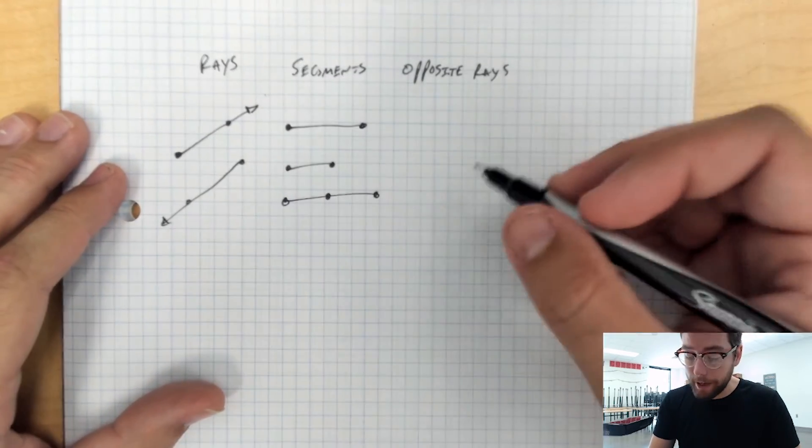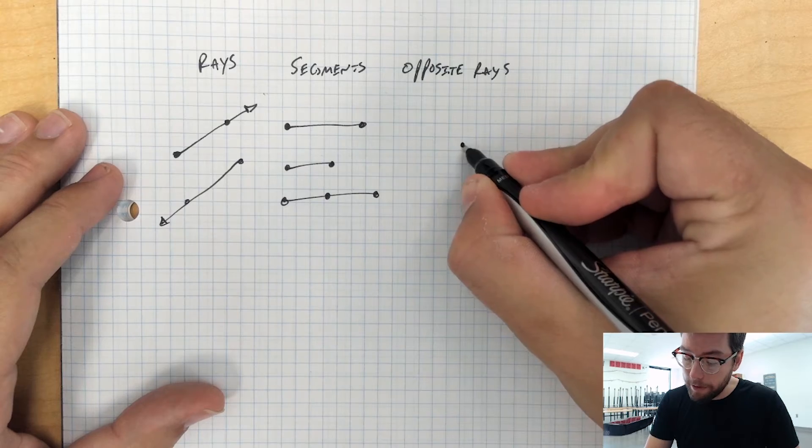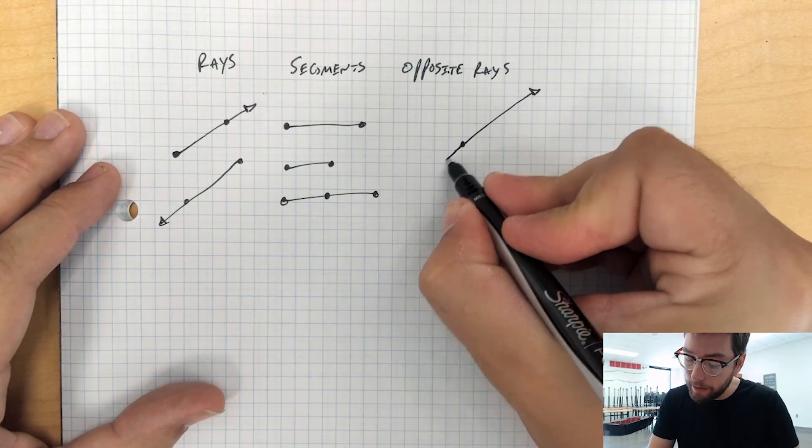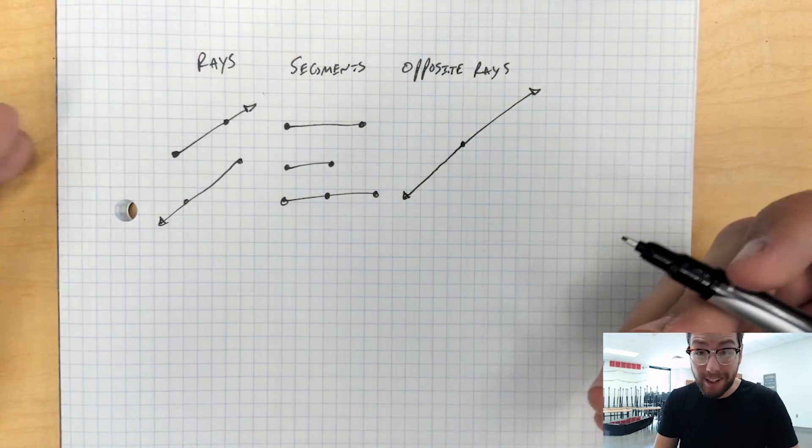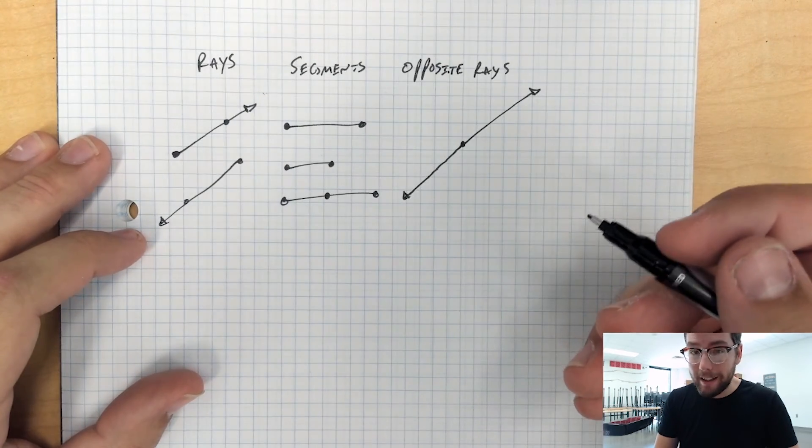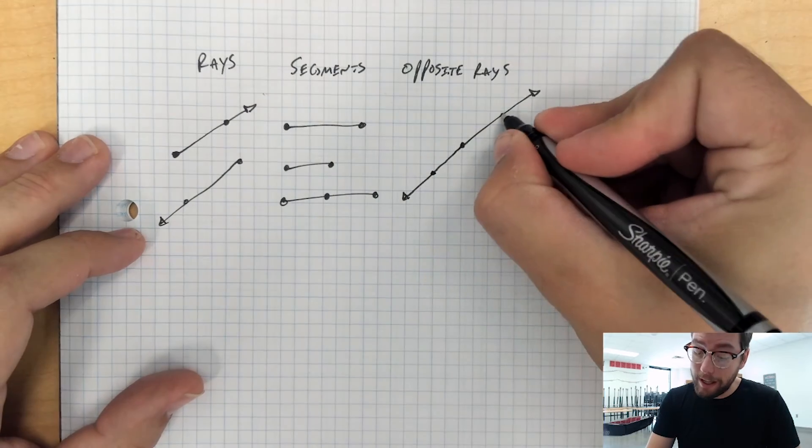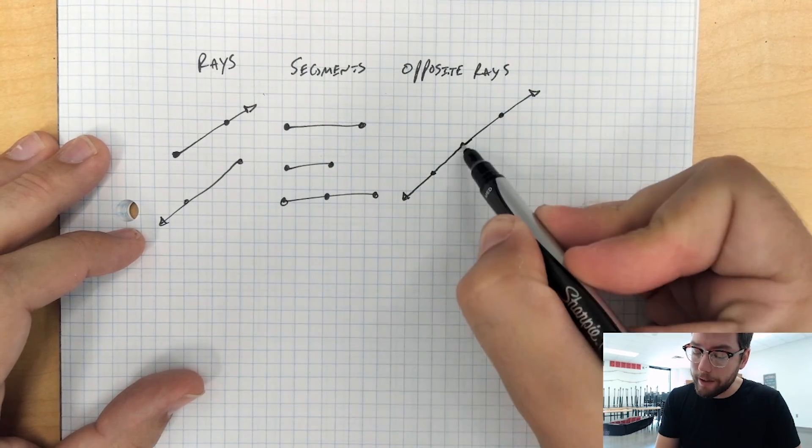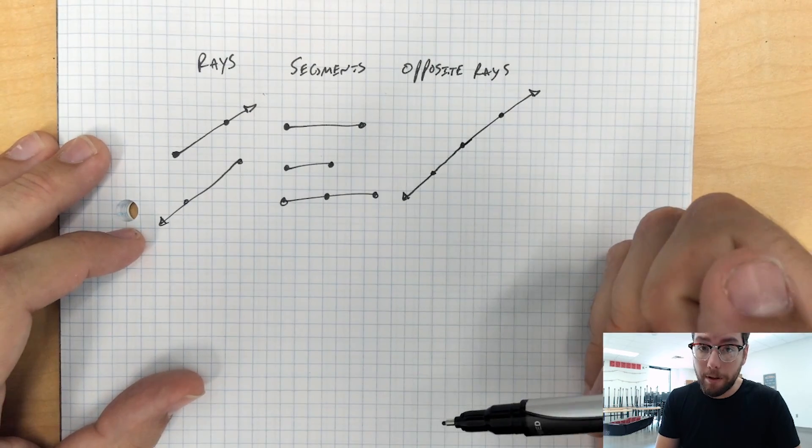And then we have opposite rays. Opposite rays, if you could imagine, we have a ray going off this way, and then in the opposite direction, we have another ray going off in this direction. Now, what does that look like to you? To me, that kind of looks like a line. And that's exactly what it is. But in this one, we have very distinct two rays going off in opposite directions.